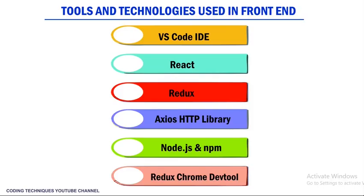The next thing we will look at is the tools and technologies we use. In the frontend we use VS Code IDE, React, Redux, and Axios — an HTTP library we use to perform REST API calls. We also use Node.js, npm, and the Redux Chrome DevTools.